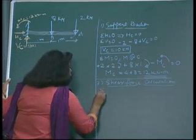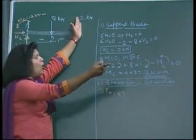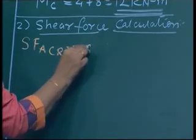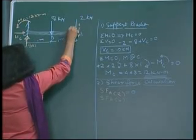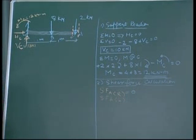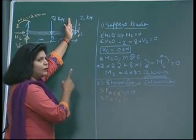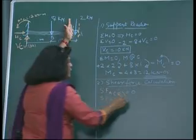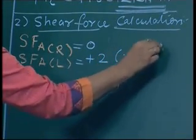We start with shear force at point A. At point A just on the left, we draw a line and look to the right side — there is no force, so shear force = 0. At point A just on the right, on the right side there is only 2 kilo Newtons, and its tendency is to push the right side in the downward direction, so shear force is positive: +2 kilo Newtons.